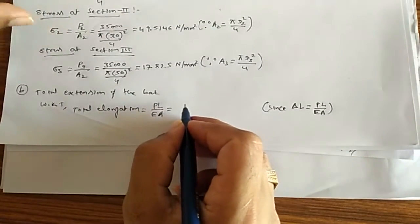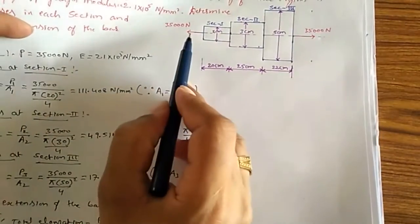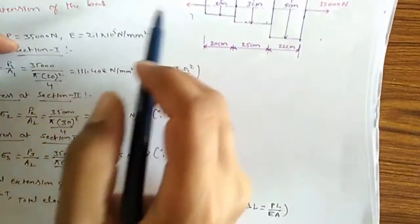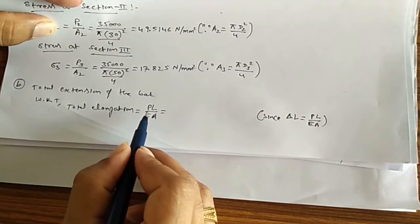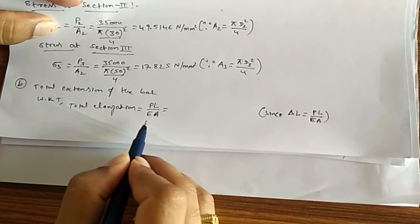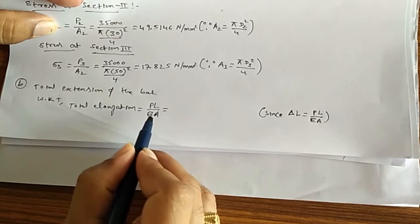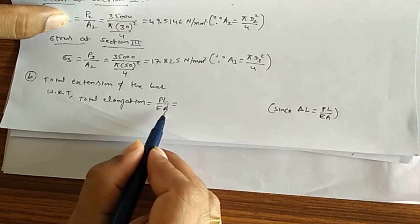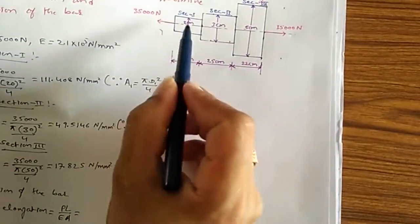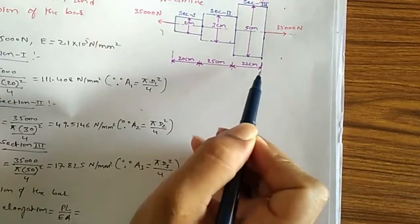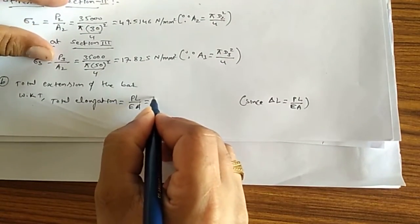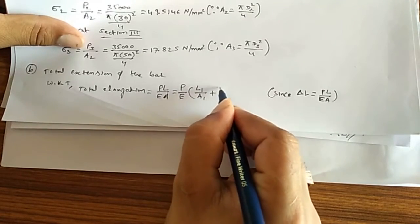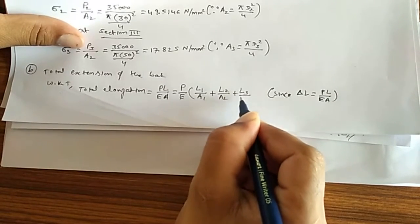In the modified formula, P is constant because the load is the same at any cross section. E is also constant as it is a material property. However, L and A are different for each section. So the modified formula becomes: δL = P/E × (L₁/A₁ + L₂/A₂ + L₃/A₃).